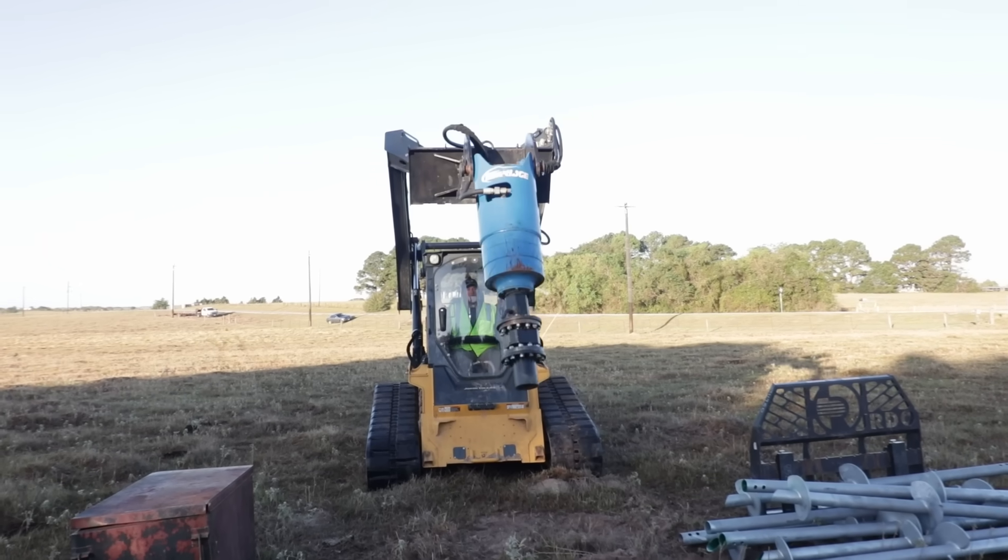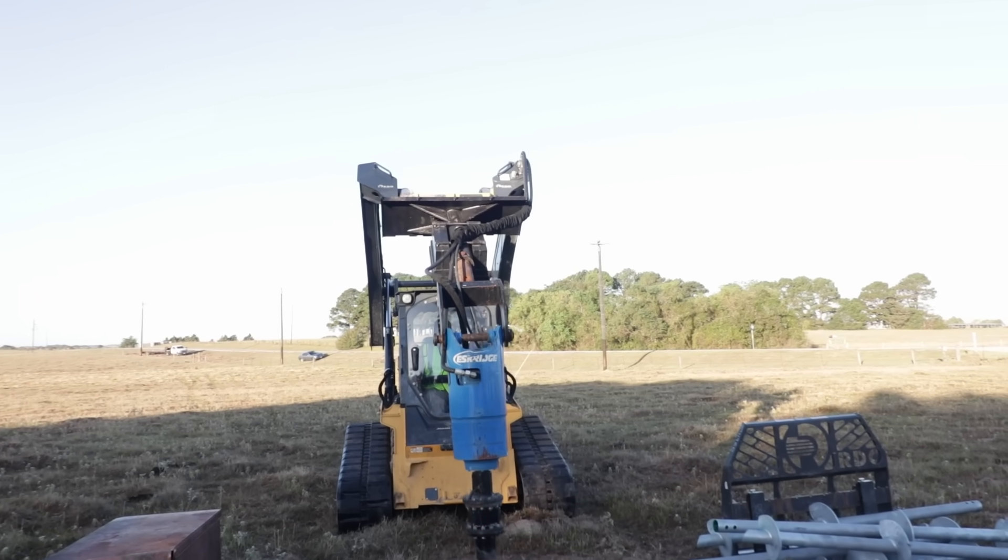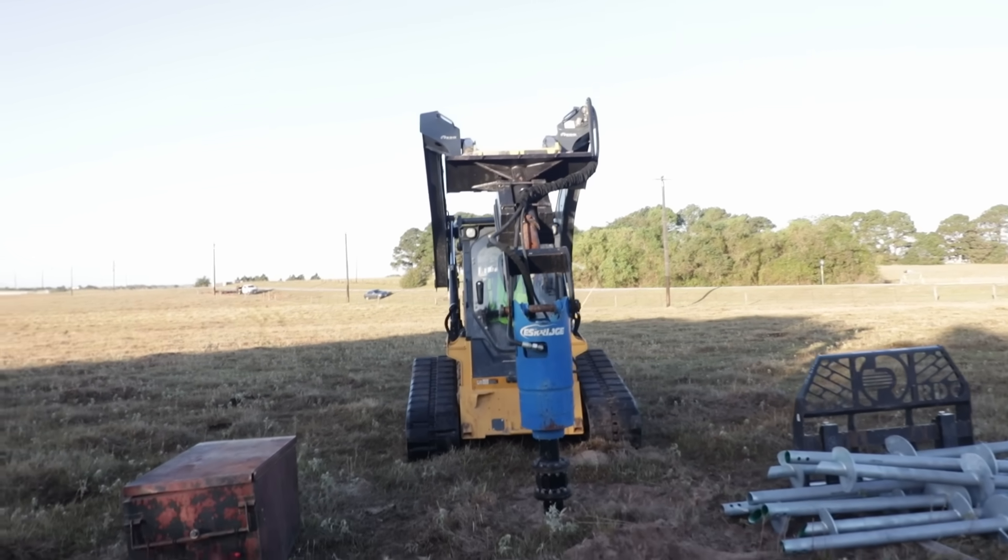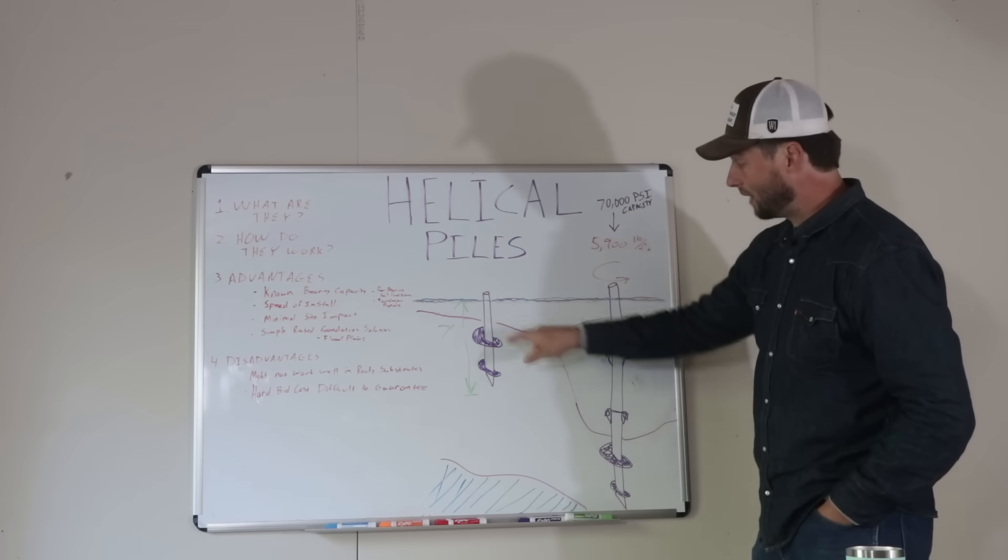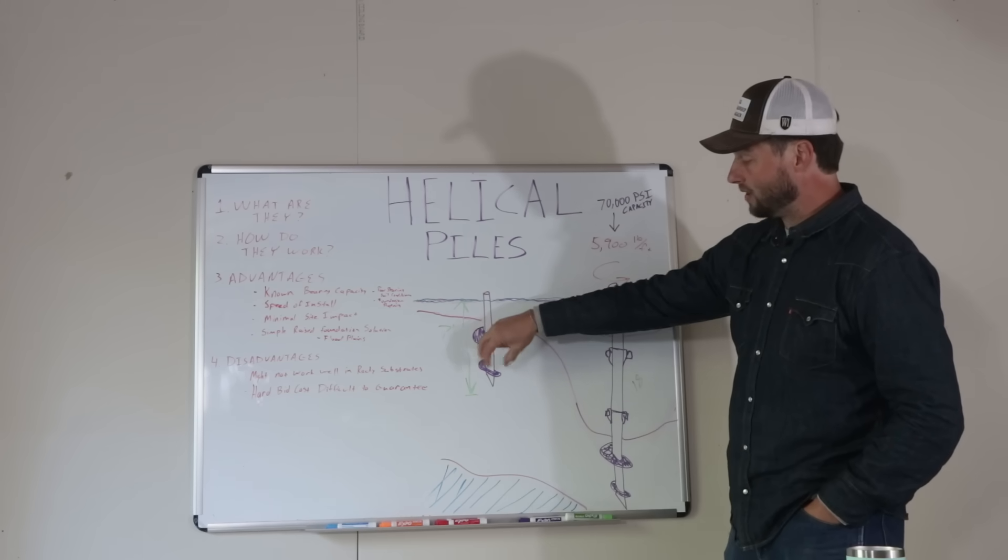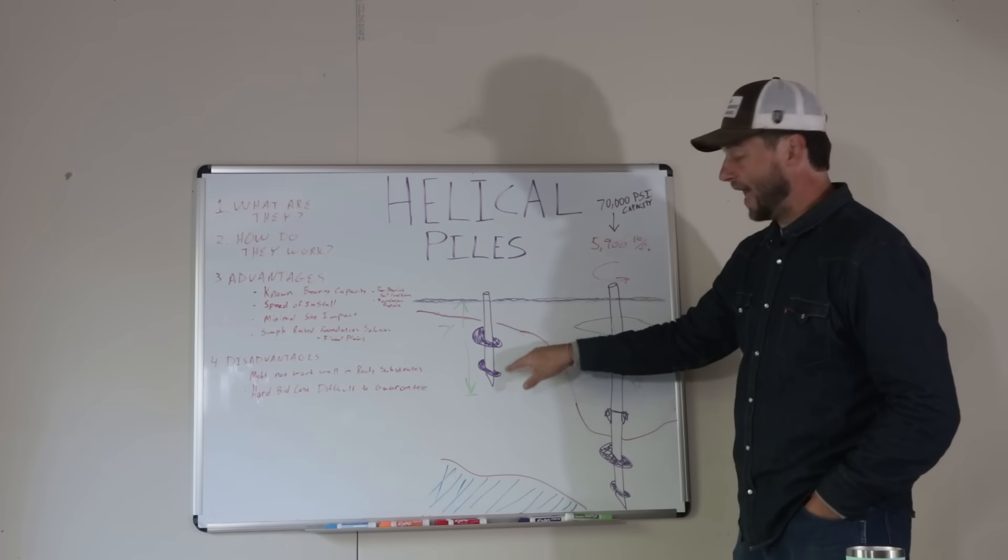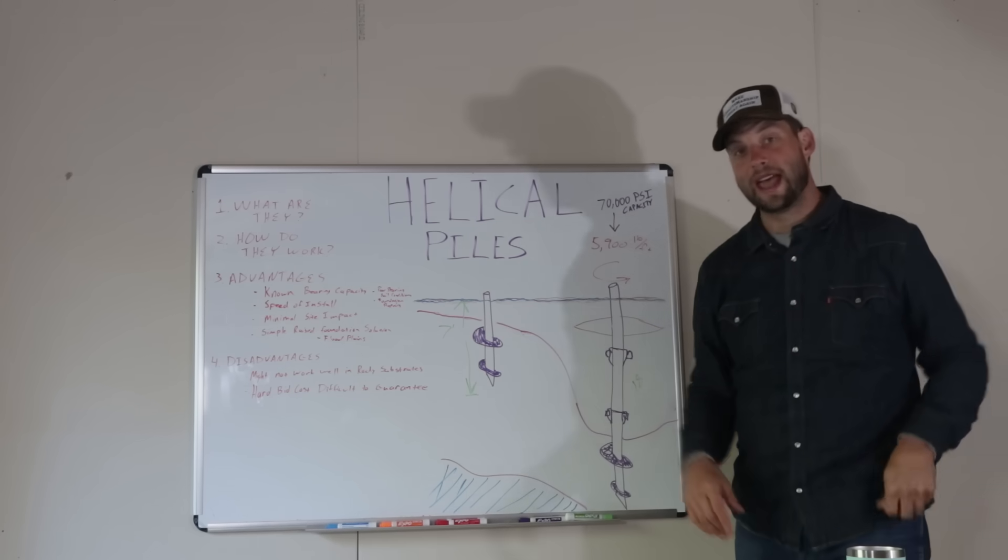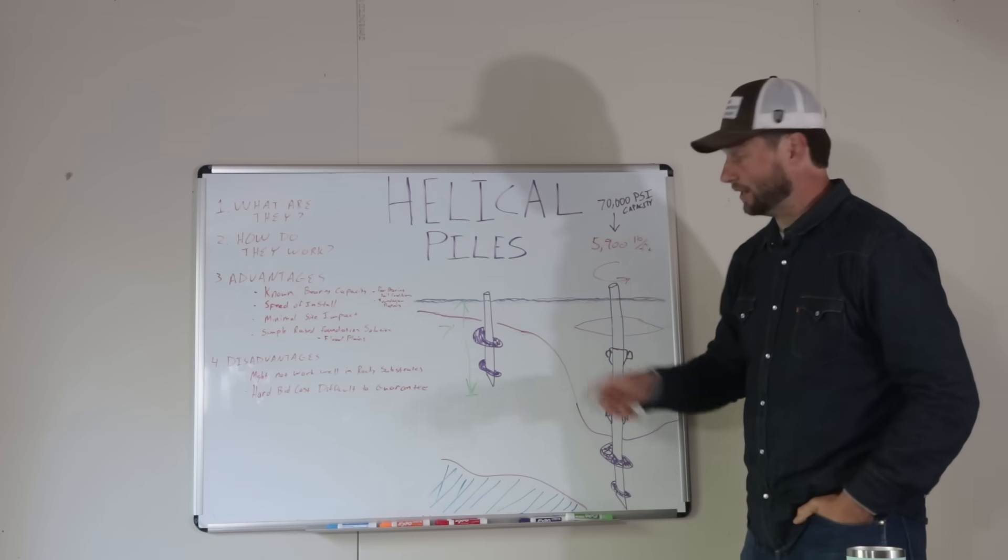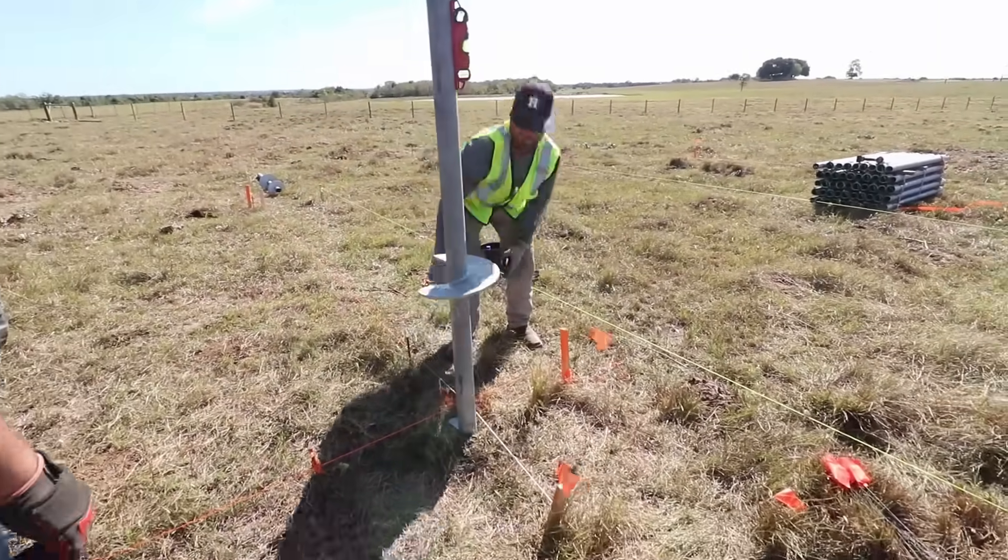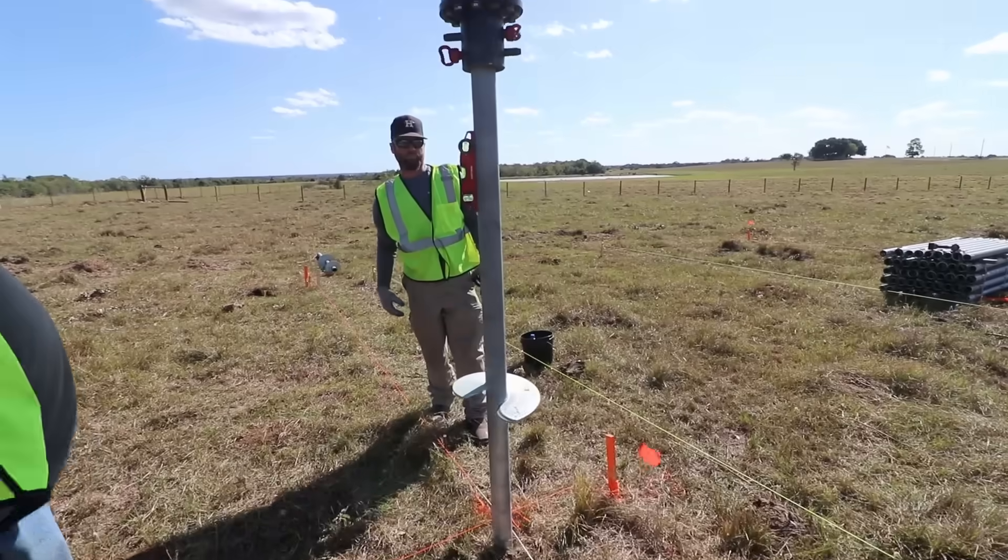I get 70,000 pounds of capacity out of this design that we're using for this house. Now that capacity is based on both the torque that I apply as well as the design of the pile. If I have two helixes like this and their diameters are 8 and 10, then I get 70,000 pounds of capacity. As I add more helixes, as I increase the diameter of those helixes, then I get more load capacity. So I can go up to like seven of these screws and I can increase their size and they're going to be able to have more load capacity on them.